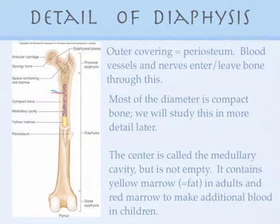Now we're going to go into the diaphysis. Look at the middle part of the diagram. There's an outer covering called the periosteum — peri means surrounding. Blood vessels and nerves enter and leave the bone through this area. We're going to look at some long bones from animals in class and you'll see tiny little holes where blood vessels and nerves enter the bone when it was living. Most of the diameter of the diaphysis area is called compact bone.